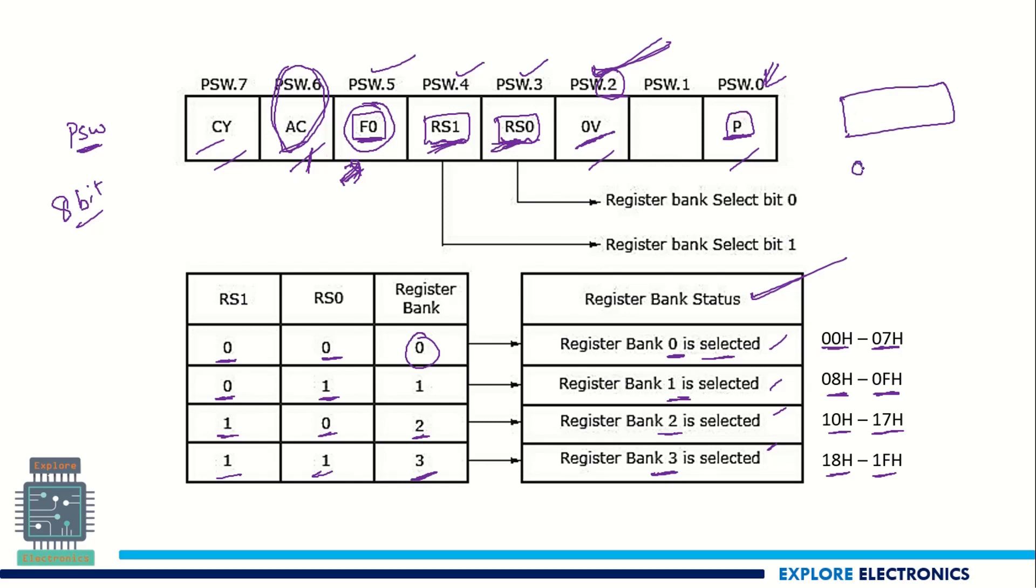Suppose out of 8 bits 01101101. If this is the output present in the accumulator register A, this register A contains five ones. 5 in the sense it is an odd number. So then parity becomes 1. This P indicates there are 5 ones in the accumulator.